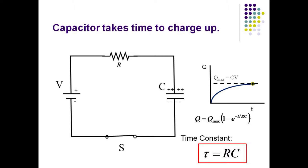The function that describes the growth of charge as a function of time is called an inverse exponential: Q equals Q-max times the quantity 1 minus E to the minus T over RC, where E is the base of the natural logarithm. Although in theory the capacitor never fully charges, in practice it is about two-thirds charged after one time constant given by the product of R and C. A large value of resistance will slow the rate of growth, and a large capacitor will take a long time to charge.